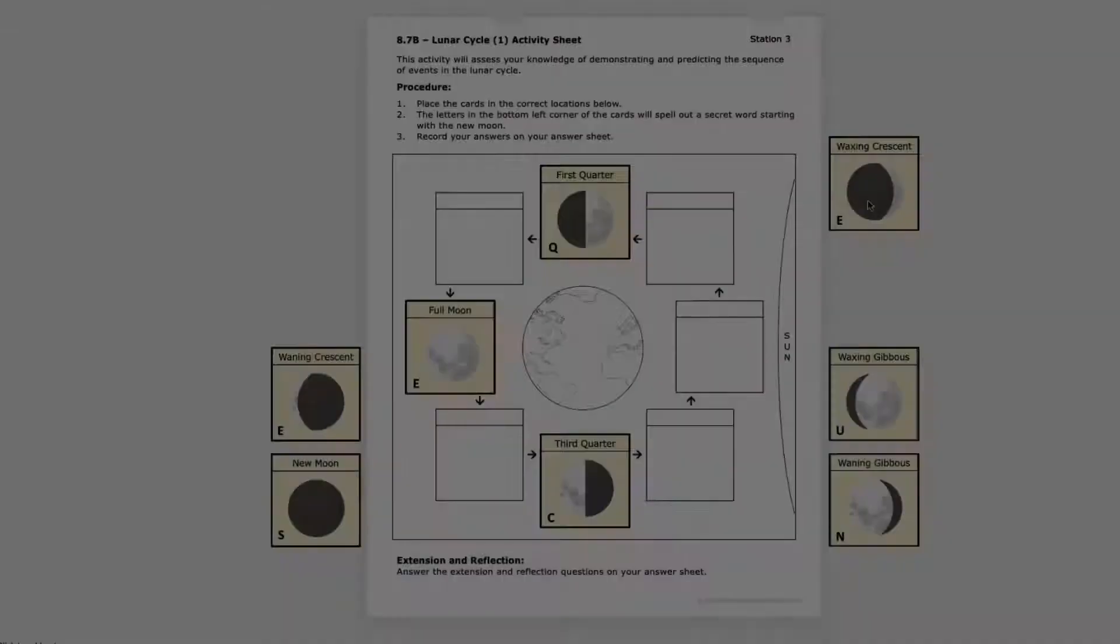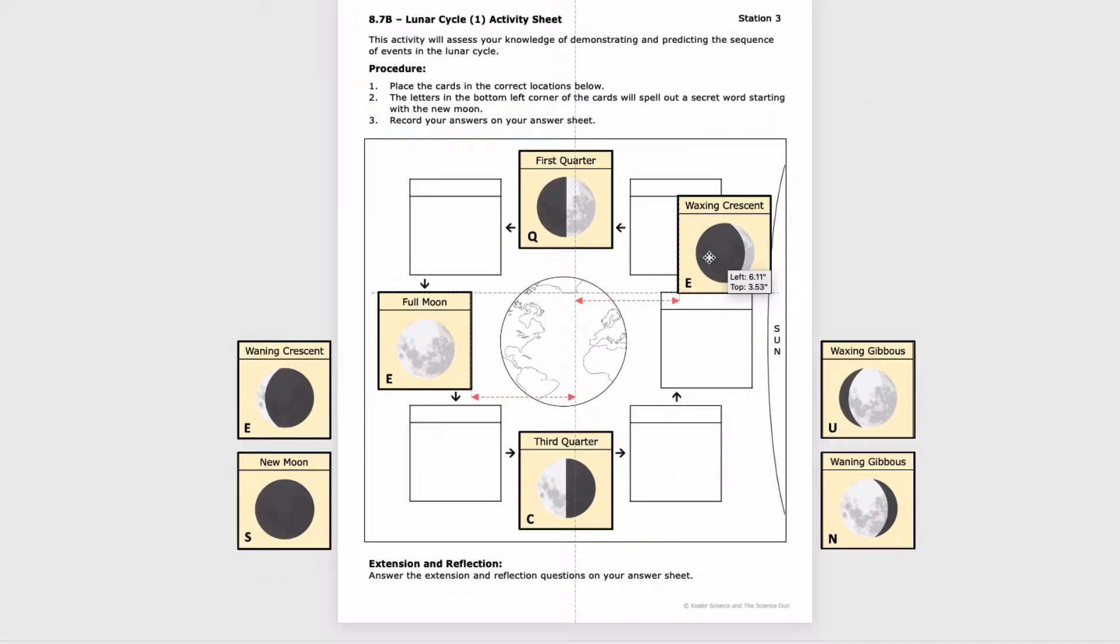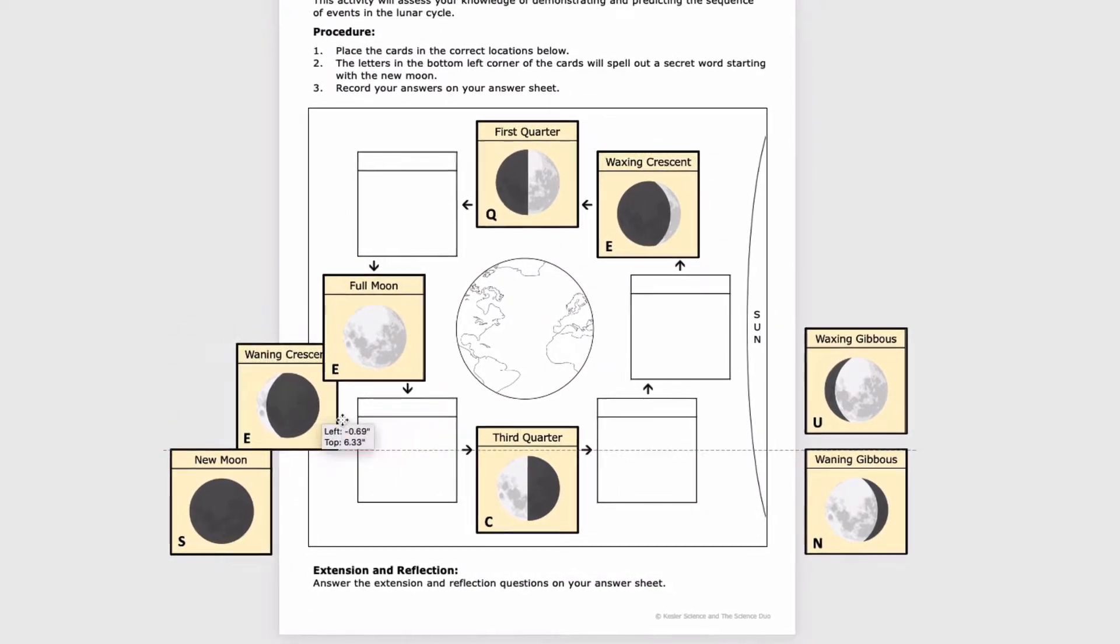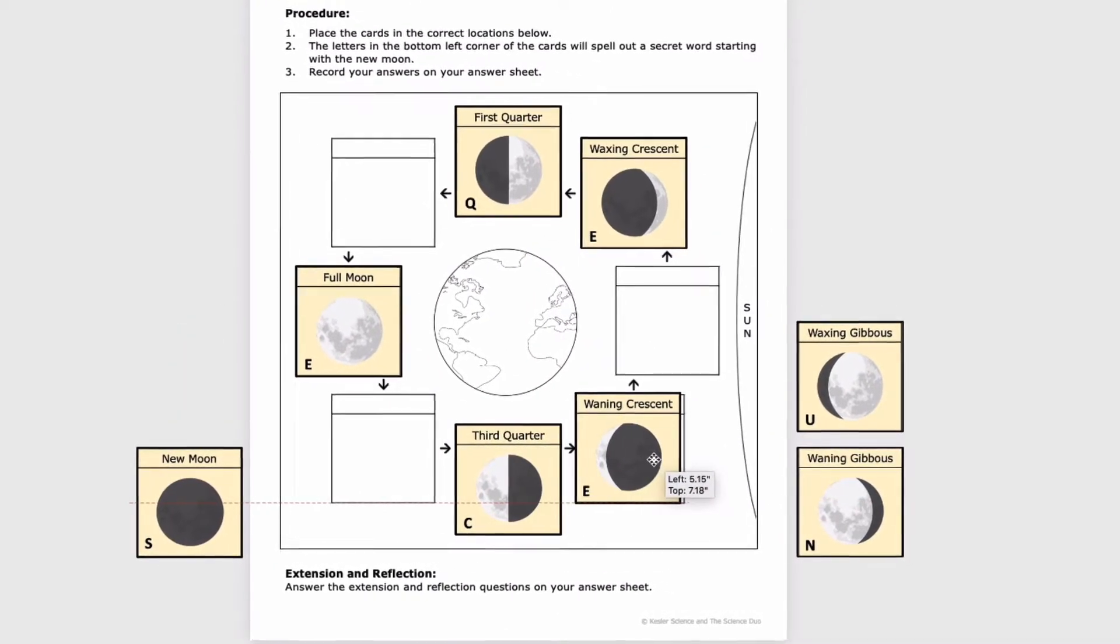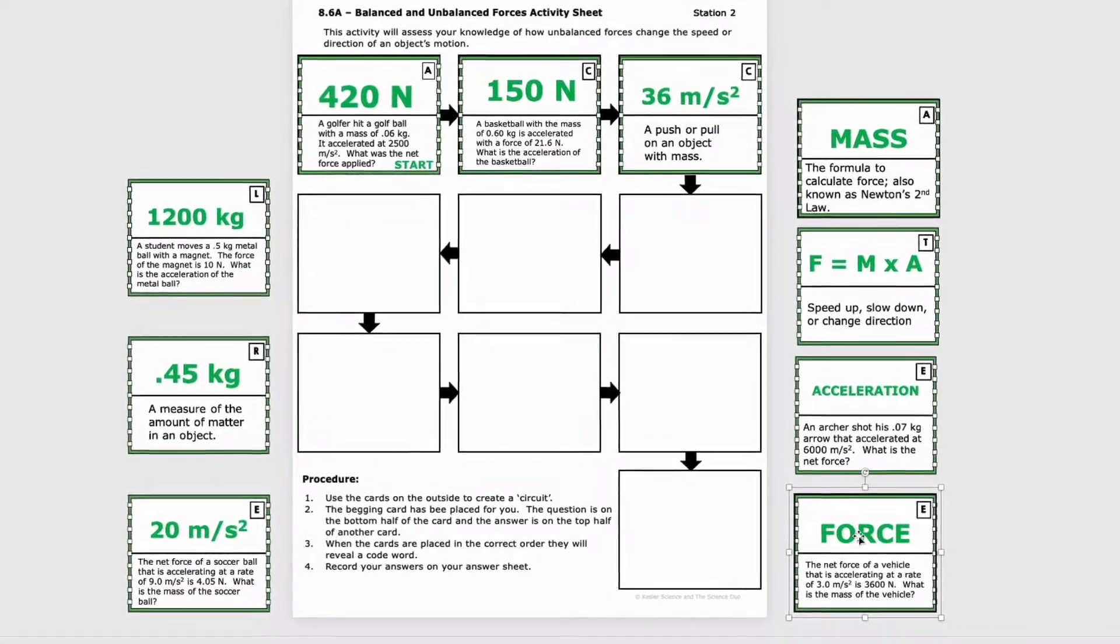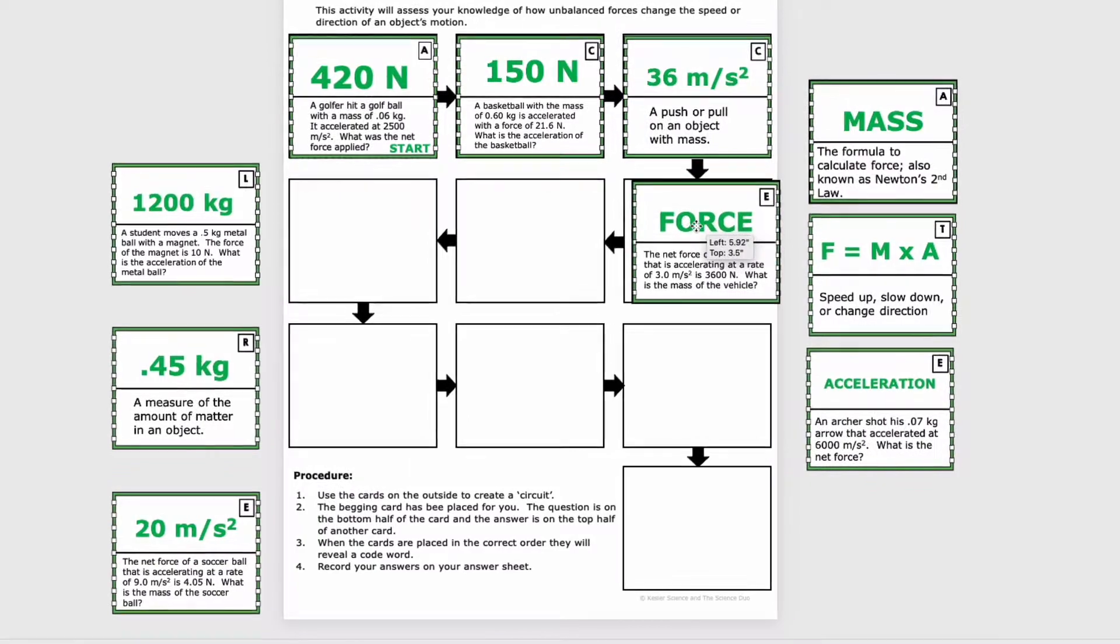The Lone Star Launch is a 15-day end-of-year review for middle school science. Although the course has been created to align with the 8th grade STAR test in Texas, many science teachers have found that the review is an excellent companion to their own curriculum.